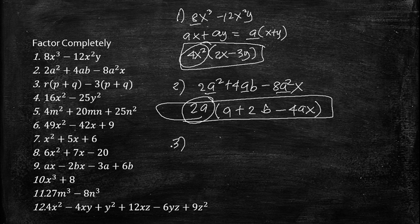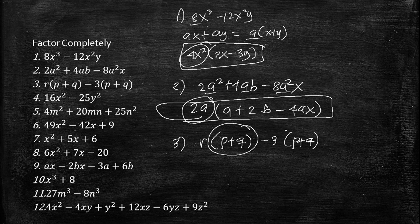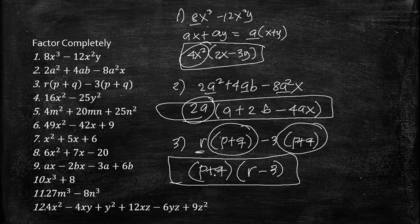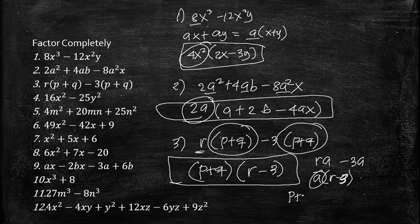In number 3, we have r(p + q) − 3(p + q). The common factor is (p + q), so the factored form is (p + q)(r − 3). We can think of letting a = (p + q), rewriting it as ra − 3a, which gives a(r − 3), and substituting back yields (p + q)(r − 3).